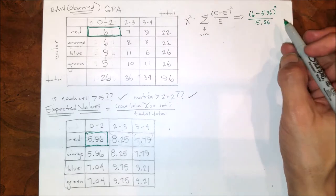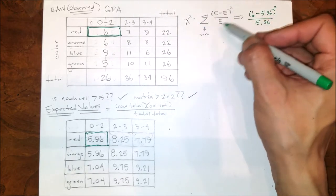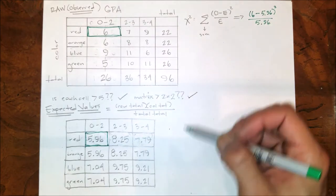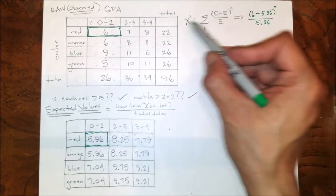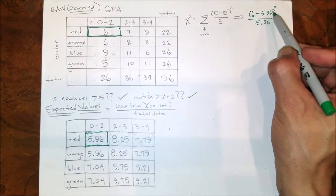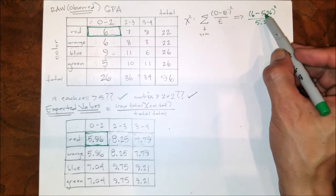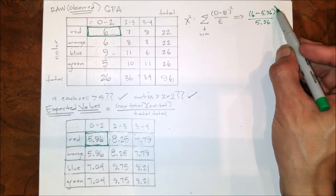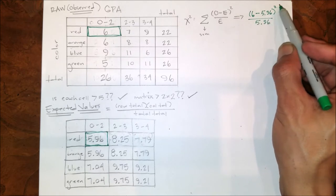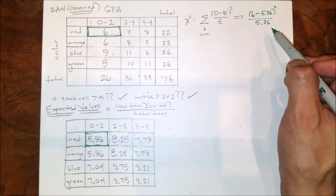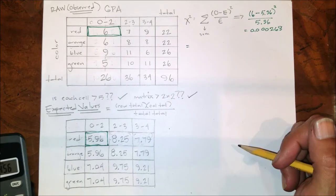So for my first go around, I'm going to have to do this same process for each one of these cells. For my first go around: observed 6 minus the expected value that goes with it, 5.96. Subtraction first, squared second. Reduce inside the parentheses first, then square, then divide, and that equals. One cell down.